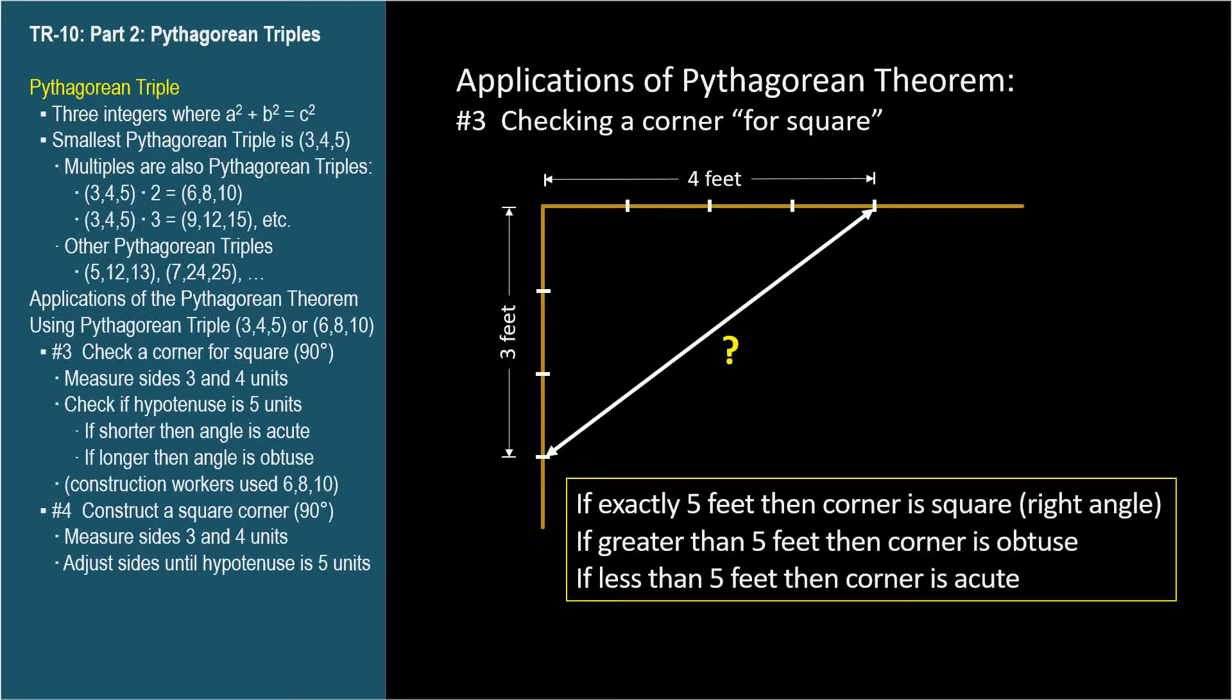If greater than five feet, then the corner is obtuse. If less than five feet, then the corner is acute.